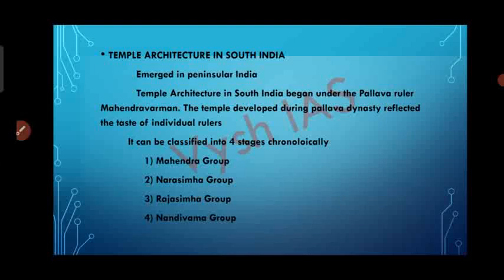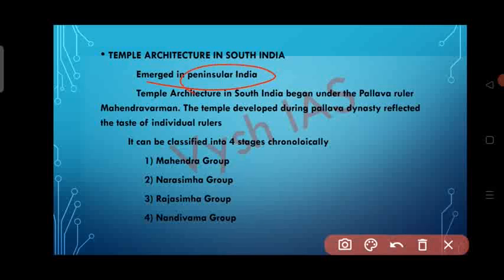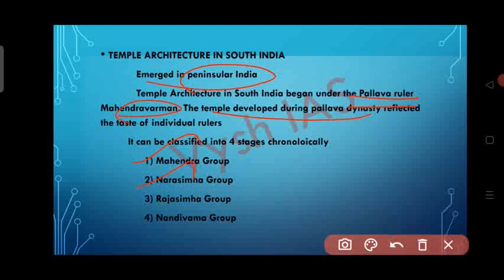Now let's see about temple architecture in South India, which emerged in Peninsular India. Temple architecture in South India began under the Pallava ruler Mahendra Varman, and the temples developed during the Pallava dynasty reflected the taste of individual rulers — each ruler had their own style. It can be classified into four stages chronologically: the Mahendra group, Narasimha group, Rajasimha group, and Nandi Varma group.